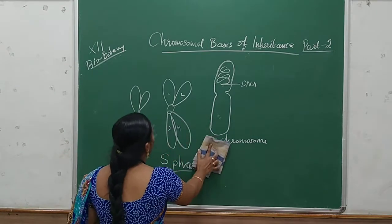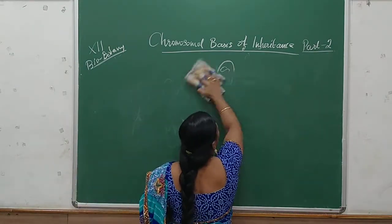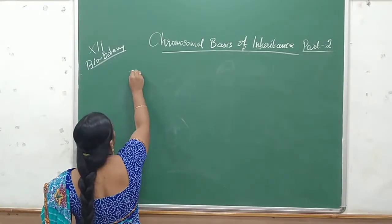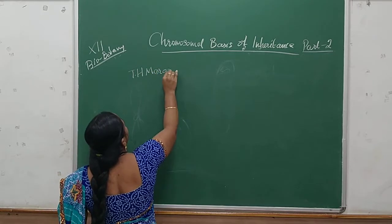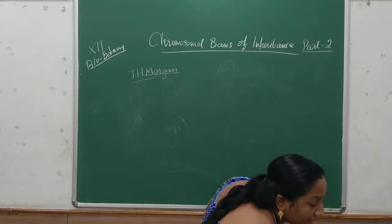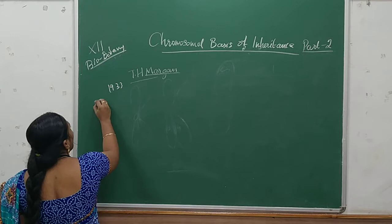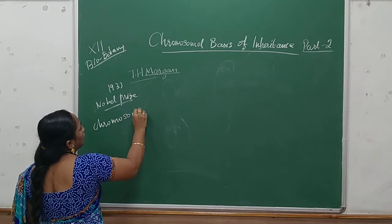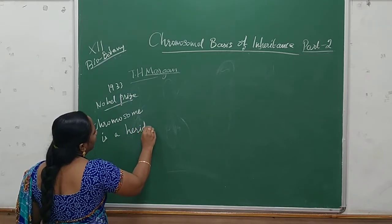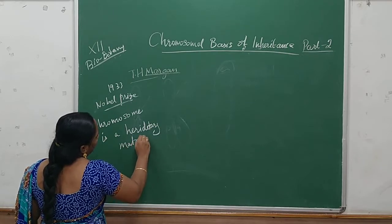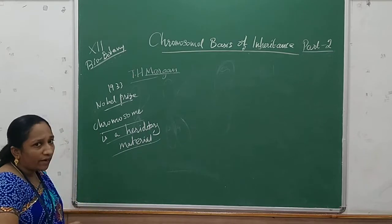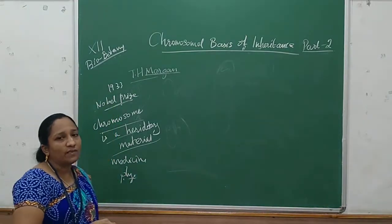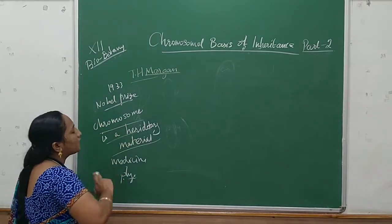Up to what we learned in the last class — up to the evidence. What evidence? Who gave the evidence that chromosome is a genetic material? T.H. Morgan gave the evidence. Because of this evidence, he got the Nobel Prize in 1933 for identifying that chromosome is a hereditary material, in both medicine and physiology. Because of his invention, he got the Nobel Prize for giving the information that chromosome is a hereditary material.